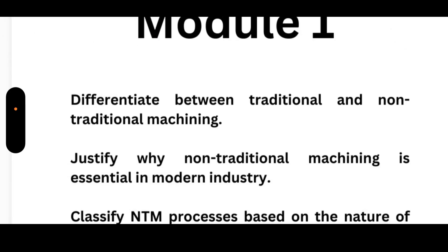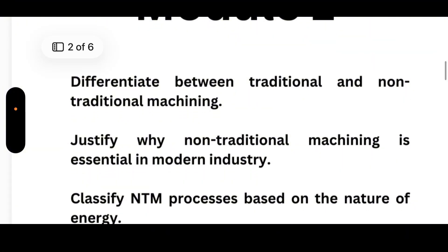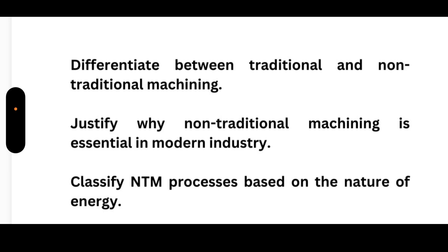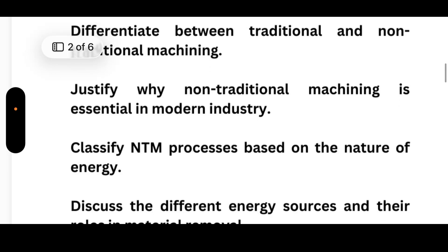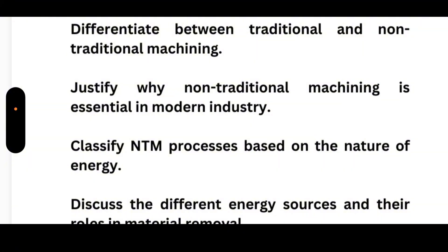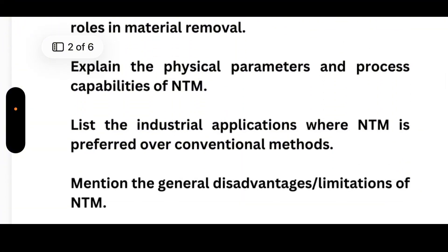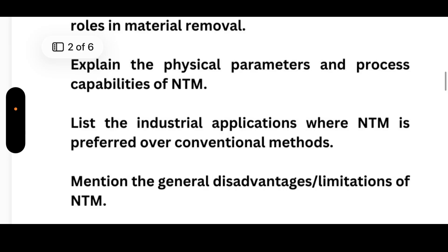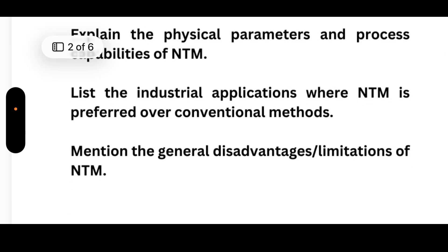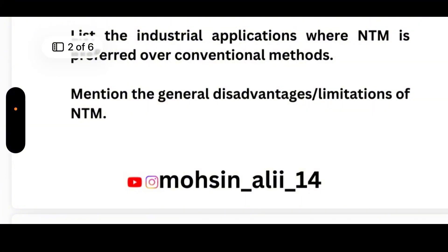Let's start with Module 1, which has super important and repeated questions. These include: differentiate between traditional and non-traditional machining, justify why non-traditional machining is essential in modern industry, classify NTM processes based on the nature of energy, discuss the different energy sources and their roles in material removal, explain the physical parameters and process capabilities of NTM, list industrial applications where NTM is preferred over conventional methods, and mention the general disadvantages or limitations of NTM.